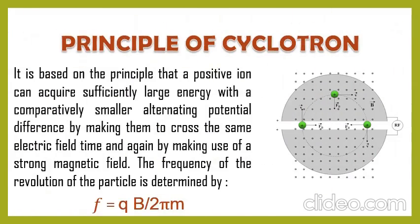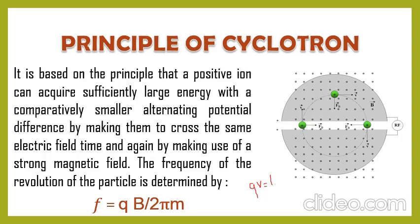Now let's start the working principle of the cyclotron. In the cyclotron we use two types of fields: one is an electric field and another is a magnetic field. We encounter the particle beam with an electric field many times so that it gains energy in each encounter. The formula is qV = ½mv². This qV is the energy gained in an electric field by a particle.